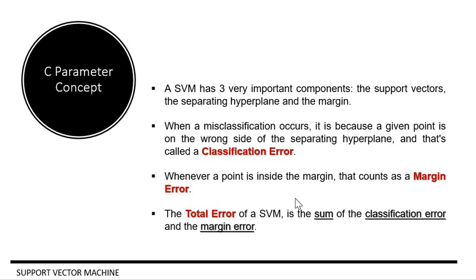And now we know three important concepts in our algorithm. We now know what support vectors are, what the hyperplane is, and what the margin is. And the maximum the margin, the better. But in order to understand now what the C-parameter is, we have to understand that we have two types of errors. We have a classification error and we have a margin error.